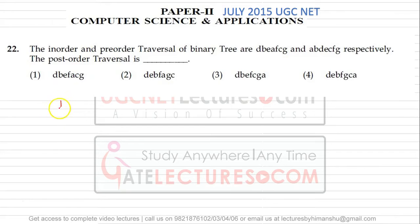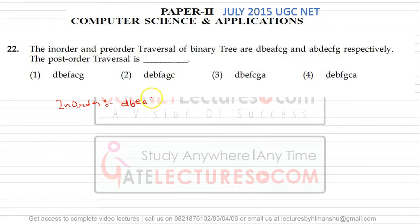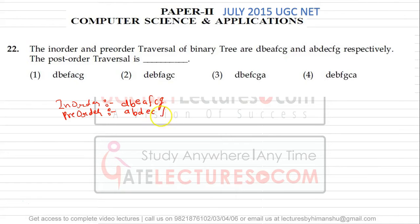The in-order traversal is given as: D, B, E, A, F, C, G. And the pre-order traversal is: A, B, D, E, C, F, G.